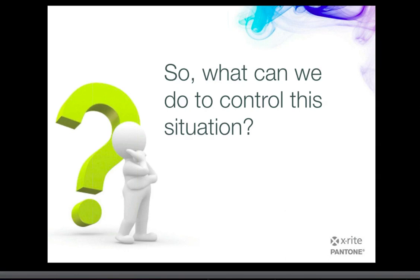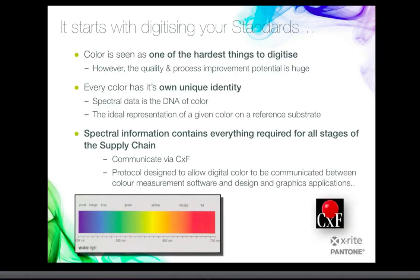What can we do to control this? We can start to put some digitization in place. What we have tried to do over the years is actually work to the spectral data. A lot of our instruments and applications have been built to work with CXF color, which allows us to load in, communicate, and share color data. It takes away a lot of the ambiguity — it comes with all the spectral data included in the color, covering all light sources. It's the true DNA of the color.